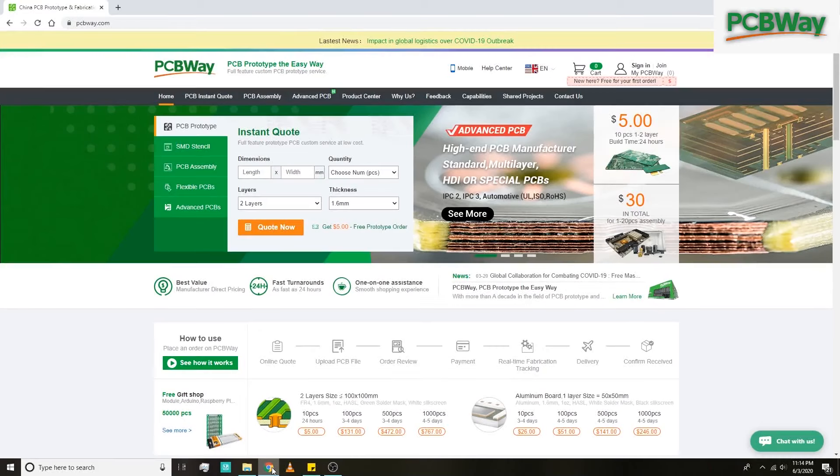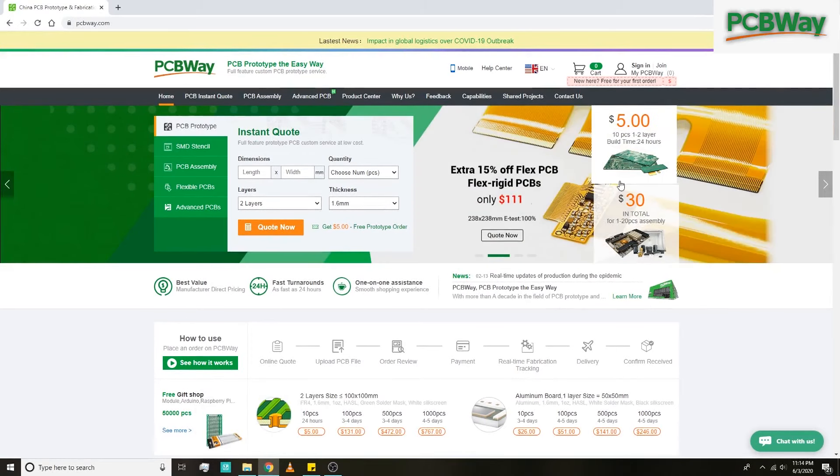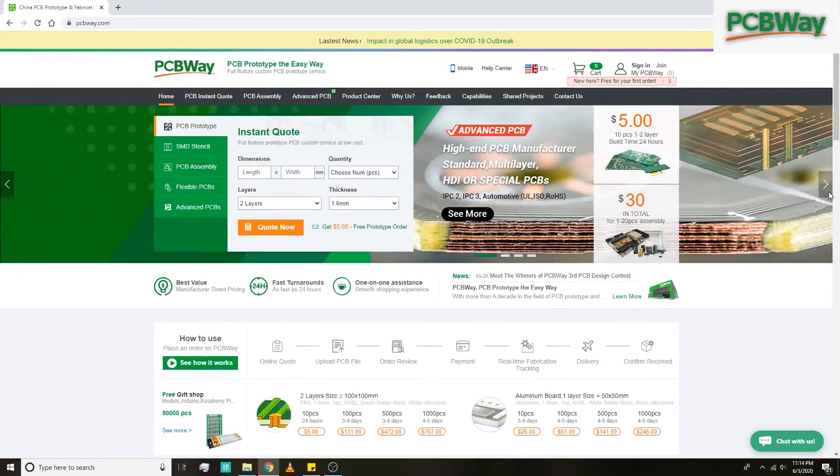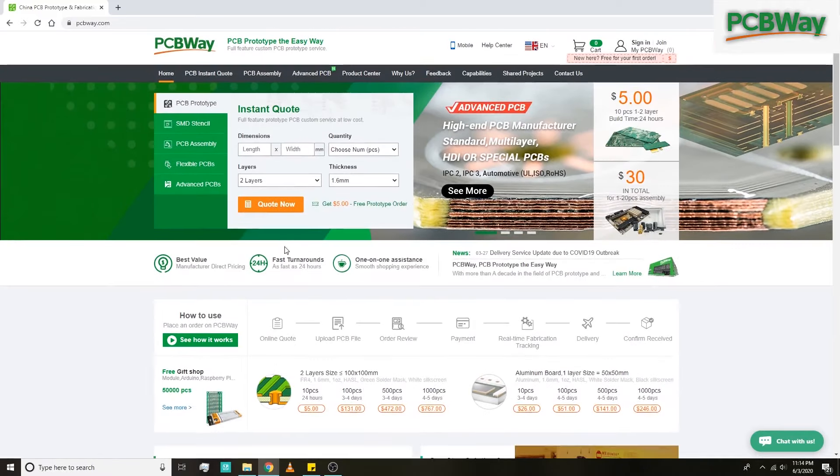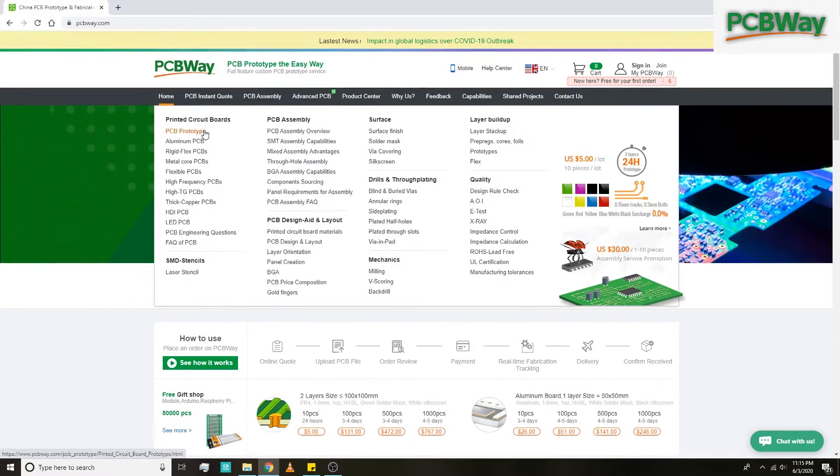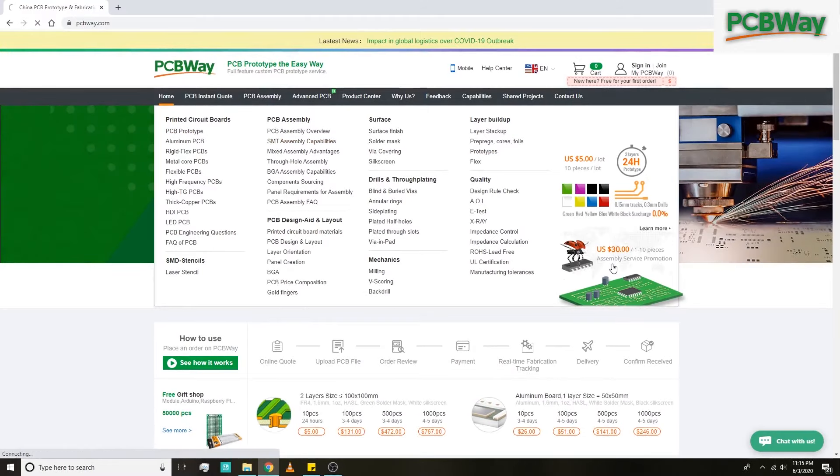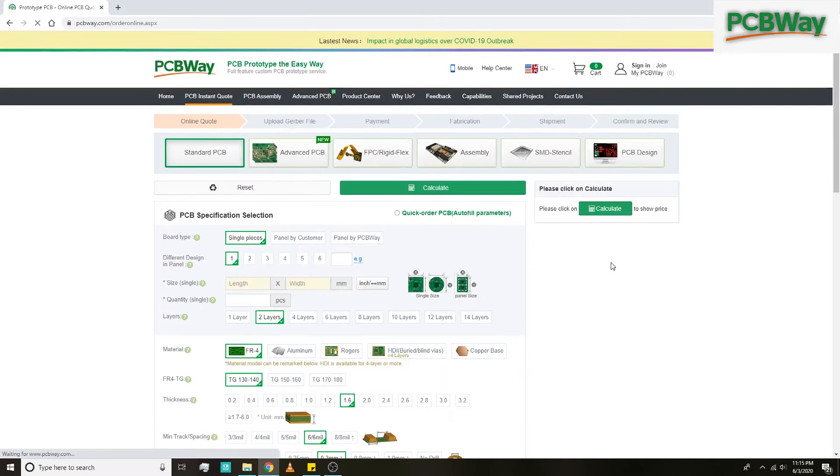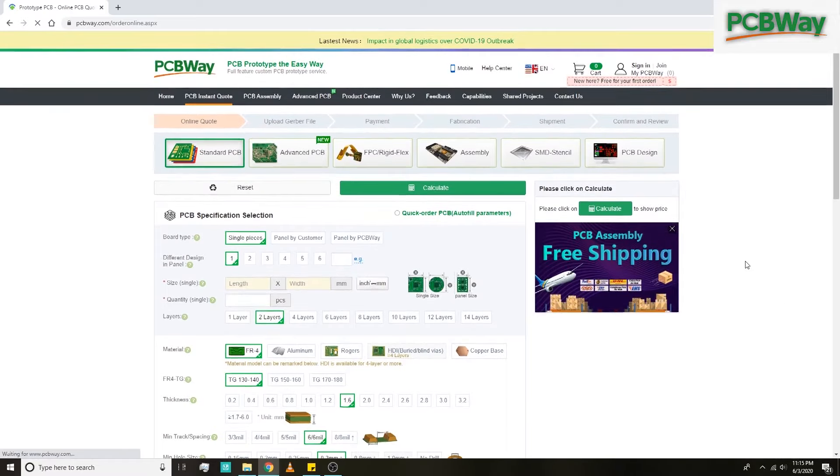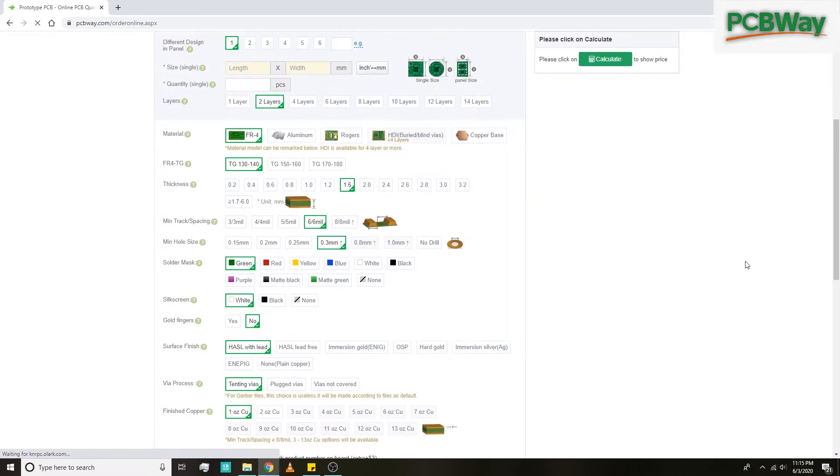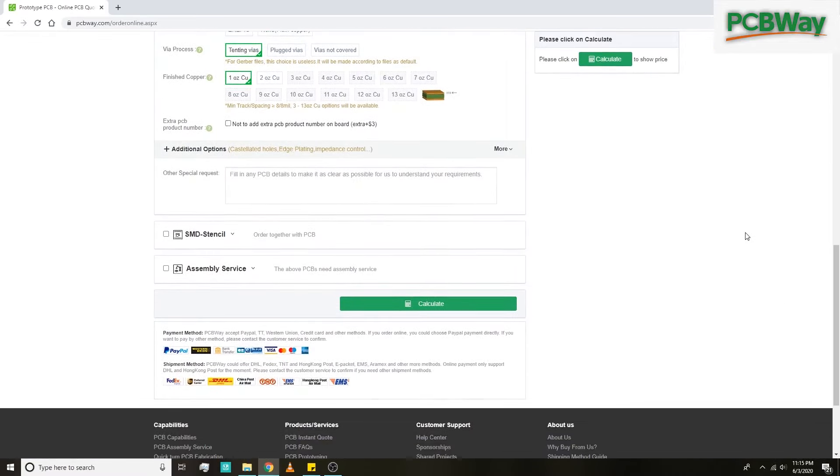I have got many PCBs manufactured from PCBWay.com. They are the leading PCB manufacturers from China. They offer 10 PCBs for five dollars only with fast turnaround times as fast as 24 hours. Apart from getting PCBs manufactured, you can get your PCBs assembled from them for just 30 dollars. Their link will be in the description box below.